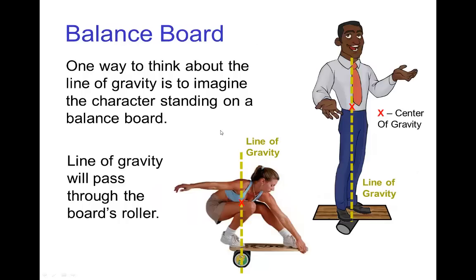Now one way to think about the line of gravity for a character is if you imagine the character standing on a balance board, which is a board that has a roller underneath it, that when the character is in a balanced pose then the line of gravity should go straight down through the roller.